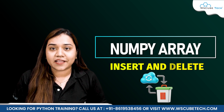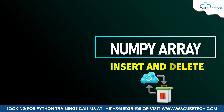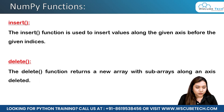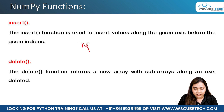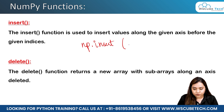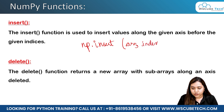For that, first of all we will be talking about what functions we use. Two functions that we use are insert and delete. Insert, as the name suggests, inserts a value. For example, if we want to insert a value, we write np.insert and give four parameters. The first is the name of the array, let's say 'arr'. After this we give the index at which we want to insert the value, then what value we want to insert, and along what axis.